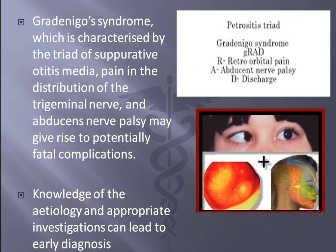So what is basically the Gradinego syndrome? It is characterized by a triad of suppurative otitis media — here you can see the discharging suppurative otitis media — pain in the distribution of the trigeminal nerve, where you can see the retro-orbital pain, and the abducent nerve palsy, which gives the patient diplopia. These palsies may give rise to potentially fatal complications.